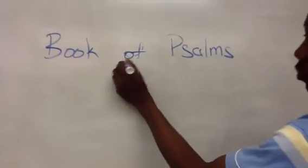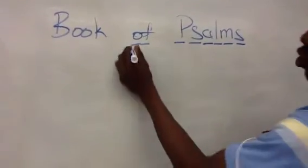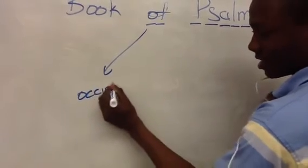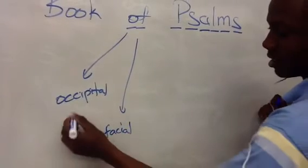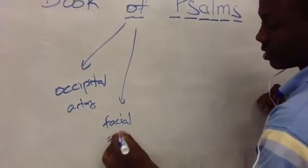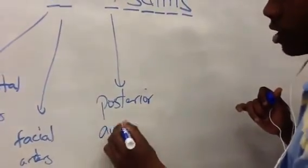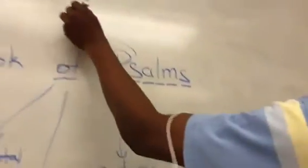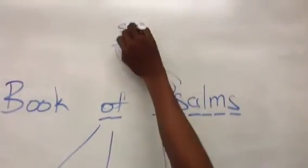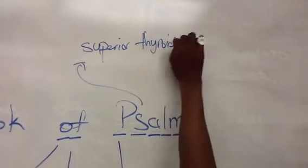The eight branches will come from O, F, P, S, A, L, M, S. O — occipital. F — facial. P — posterior auricular artery. S — this is the superior thyroid artery.